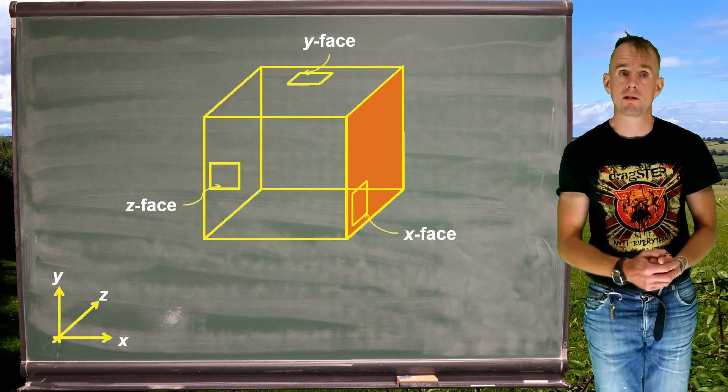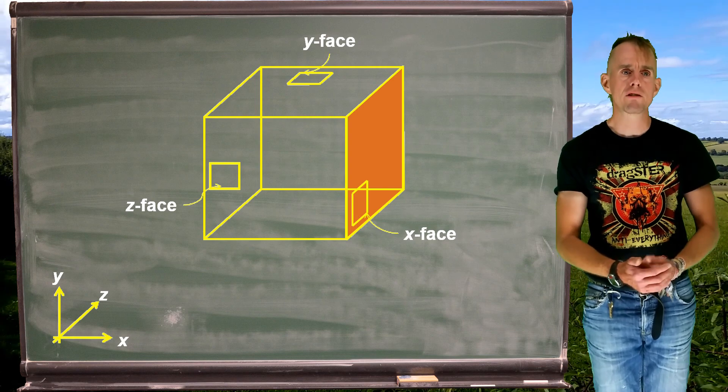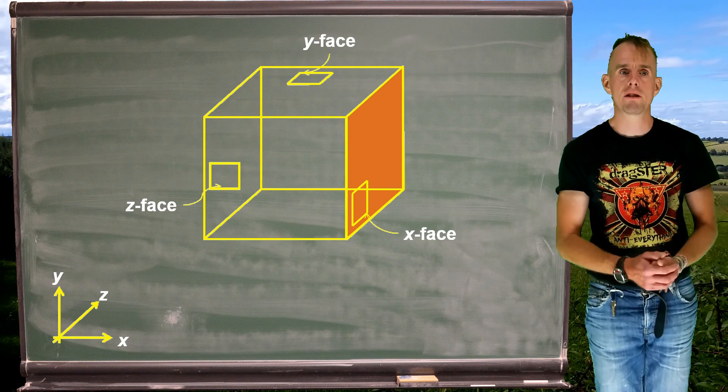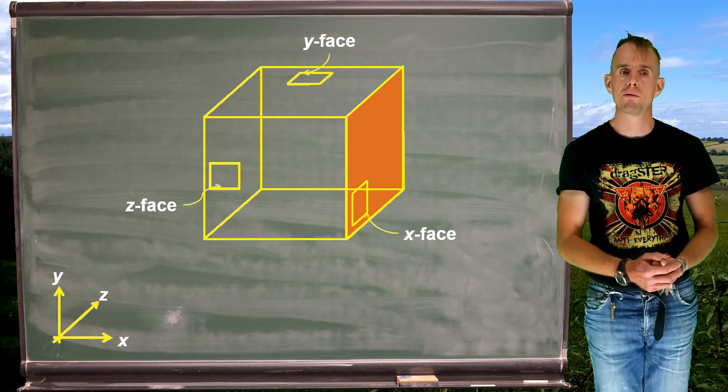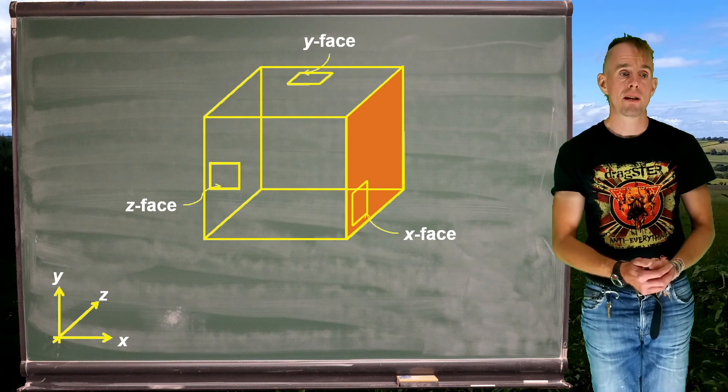It could be any coordinate system, it doesn't matter, but Cartesian is just easy to explain. So you can see that this imaginary infinitesimally small cube of fluid has x faces, y faces, and z faces.